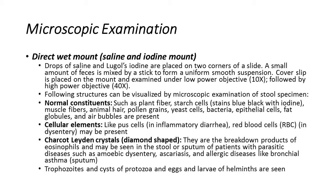Microscopic examination: after macroscopic observation, we go for microscopic examination. We do a direct wet mount using saline and iodine. For the saline wet mount, we use 0.9% saline. If any motile stage is present, we can identify the motility of parasitic stages. For example, the trophozoite stages of amoeba — Entamoeba histolytica, Balantidium coli, Giardia — whatever trophozoite stages we can see using saline. We can observe their motility.